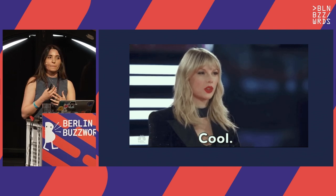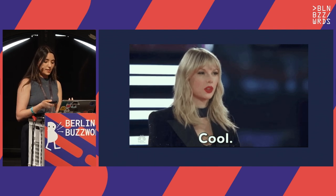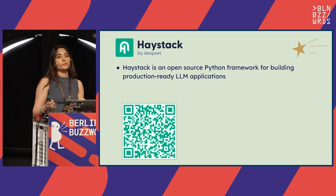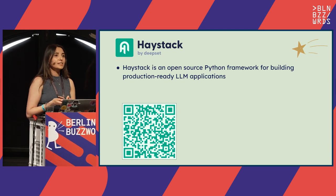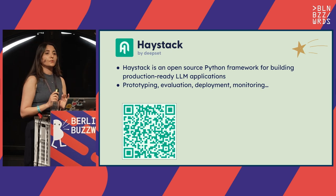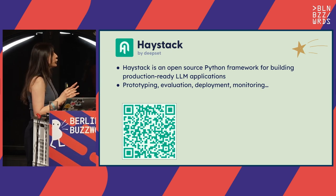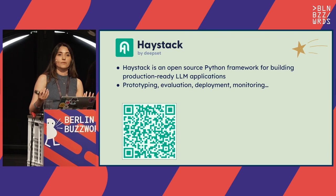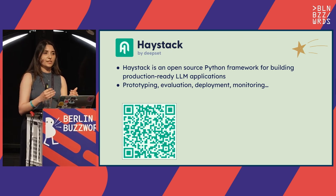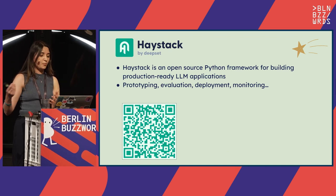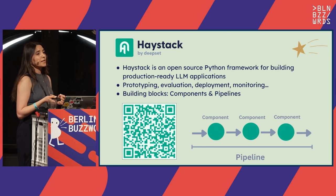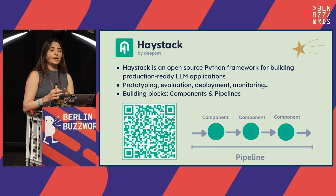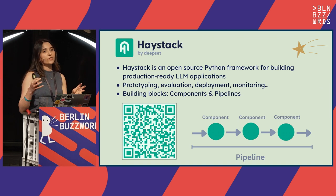But how do I systematically make that happen? How do I build an application around this? This is where Haystack comes into play. Haystack is an open source Python framework for building production-ready LLM applications. When I say production-ready, I really mean it — not only does it provide the tools you need to build your prototype, but it also helps you evaluate your system, take it into production, and keep monitoring it. Creating the POC is just the first step; then you need extra work to take it to production.